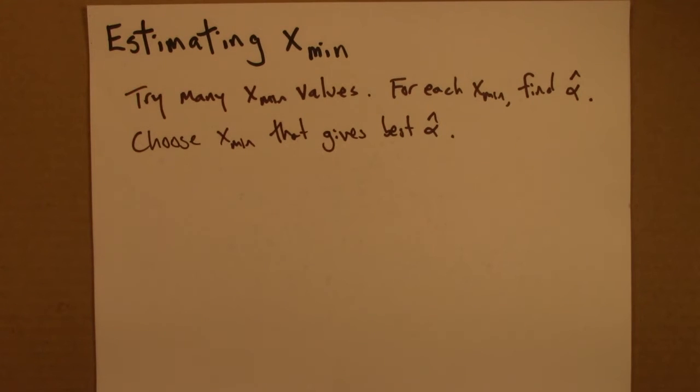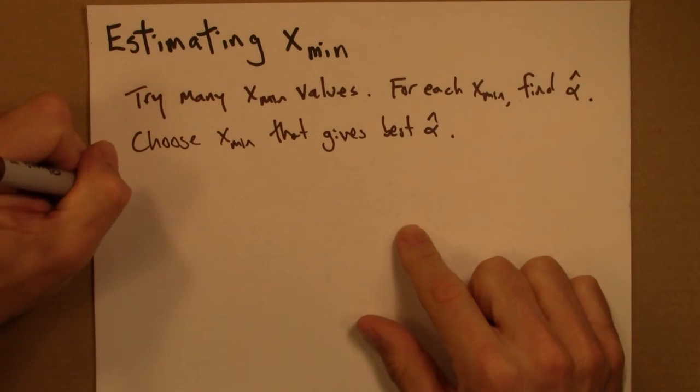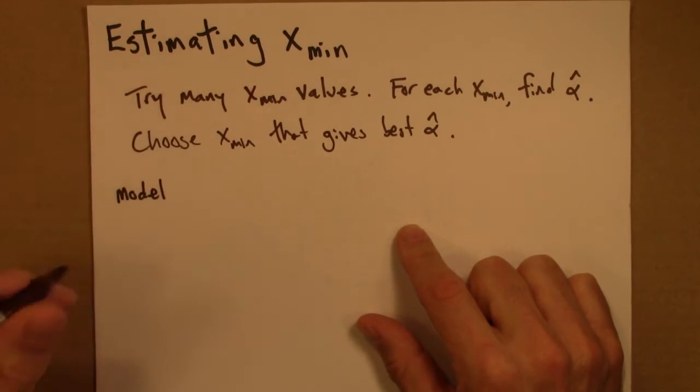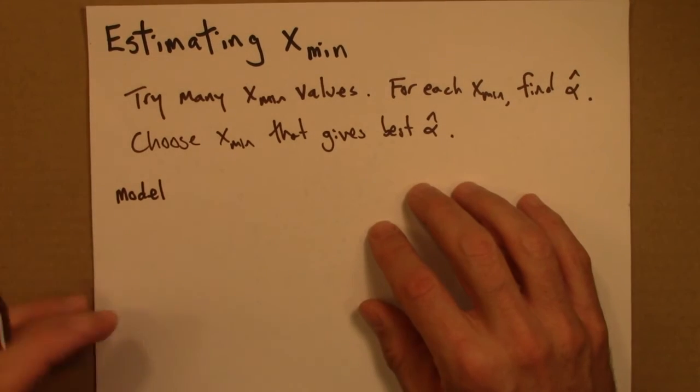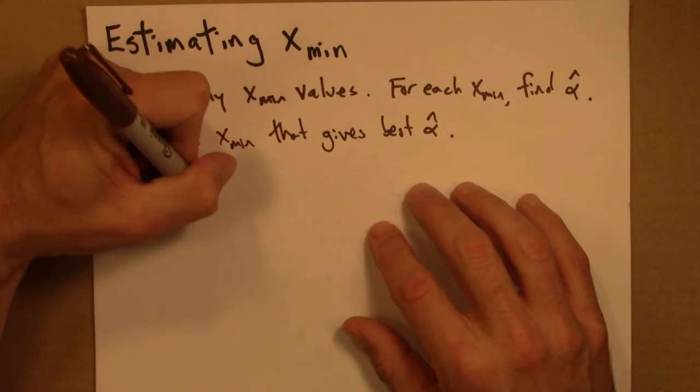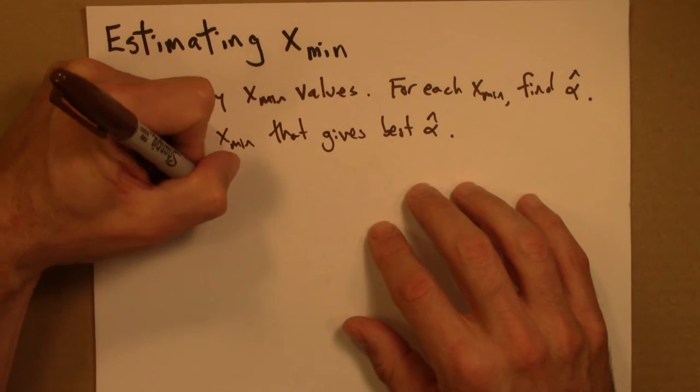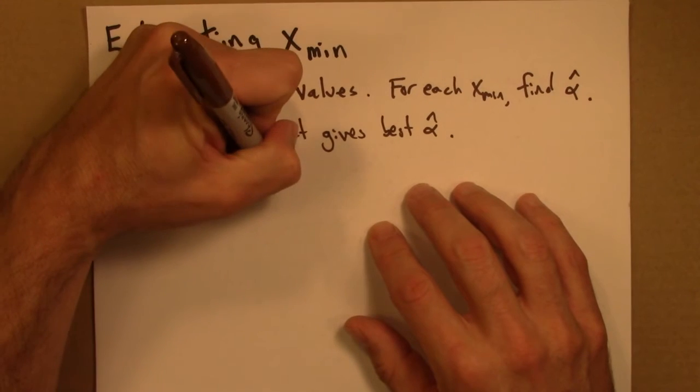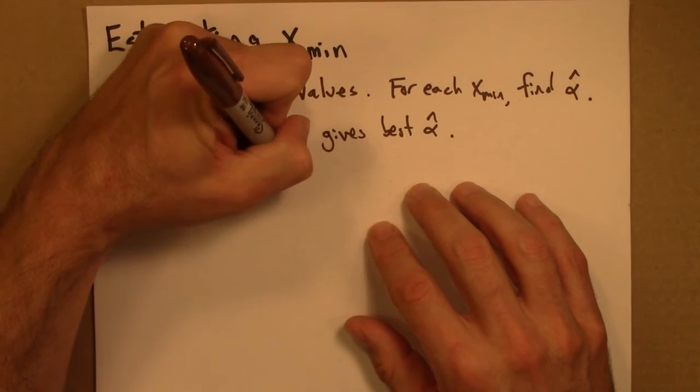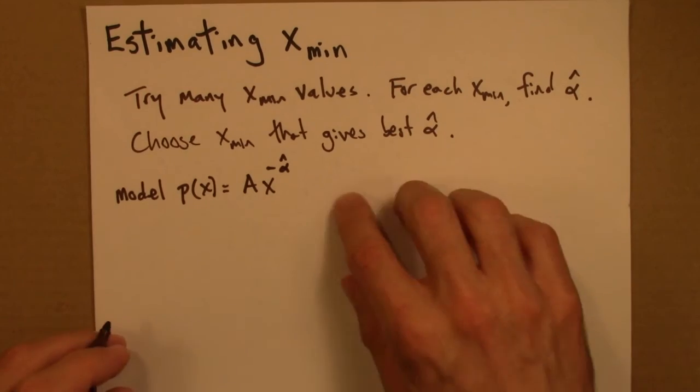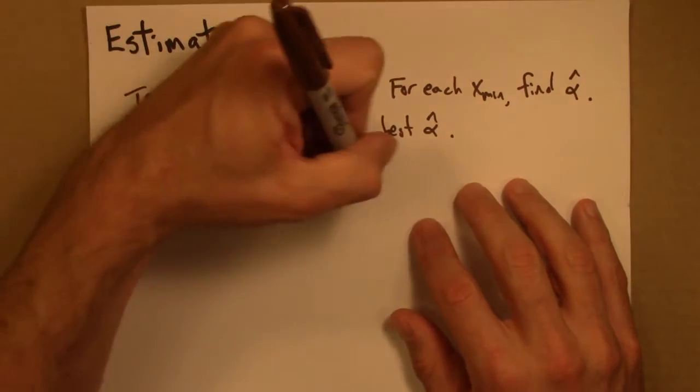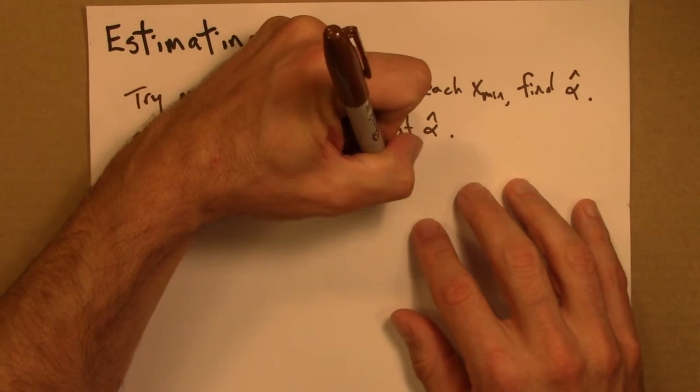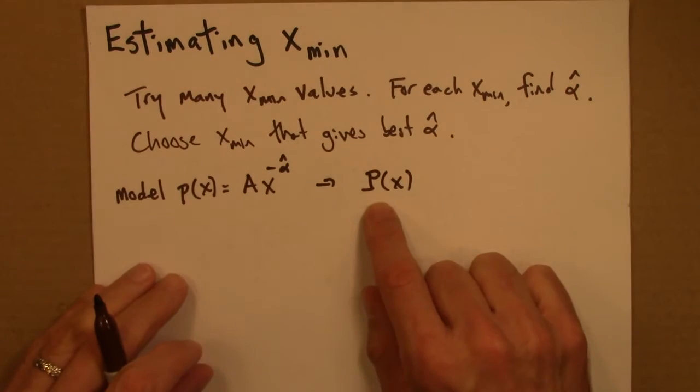So here's the idea. Once you have an alpha hat, you have a model for the data. And I'll call this p of x equals A times x to the minus alpha hat. And I could also then form a cumulative probability distribution, capital P.